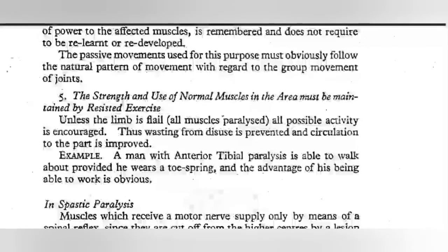The fifth principle: the strength and use of normal muscles in the area must be maintained by resisted exercise. Unless the limb is flail, all possible activity is encouraged. This reduces wasting, and circulation of this part can improve. For example, if a patient with anterior tibial paralysis can walk with splinting provided, then the advantage is that this part can continue to work.